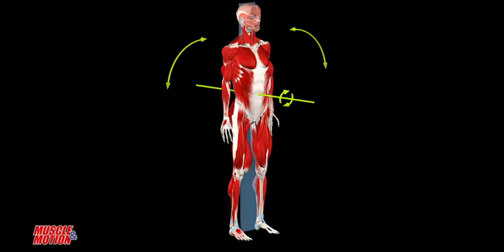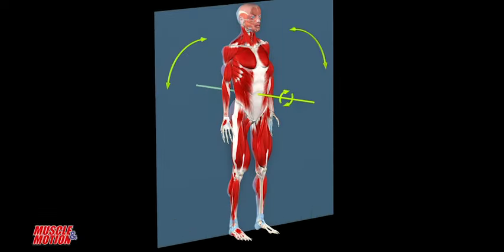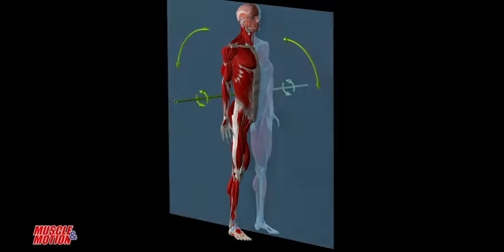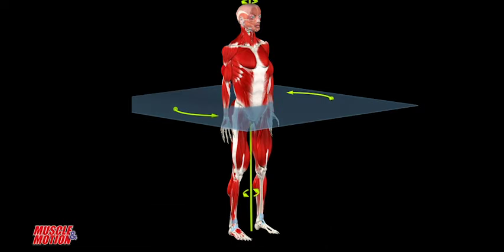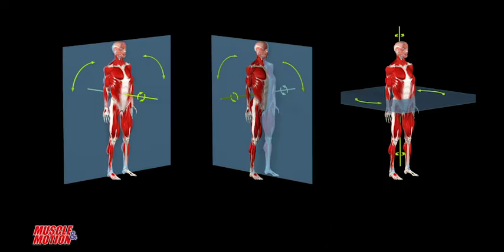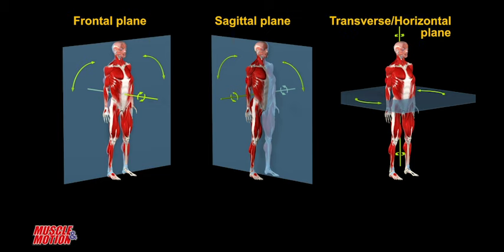Planes of movement. Human movements are described in terms of the plane in which they pass through. There are three planes of motion: the frontal plane, the sagittal plane, and the transverse or horizontal plane.